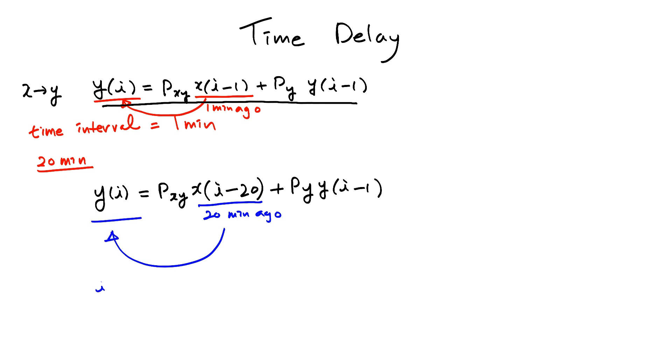For example, if I is 0, that means Y(I) is affected by X protein minus 20. If I is 20, that means Y of 20 is affected by X of 0. Basically,